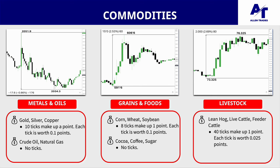The third commodity category is livestock: lean hog, live cattle, and feeder cattle. For livestock, 40 ticks make up one point and each tick is worth 0.025 points — note that's 0.025, not 0.25 like the stock indices. An example shown moves livestock from 73.325 to 76.325.